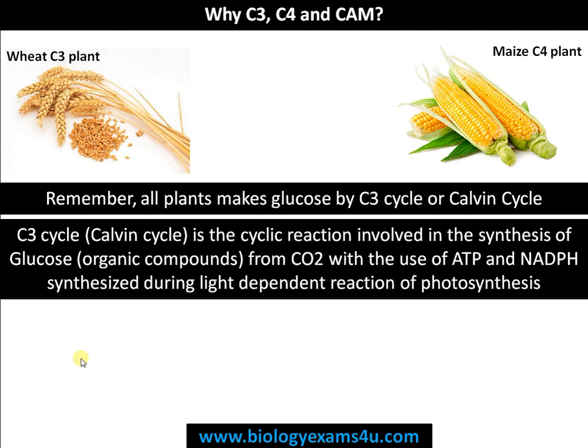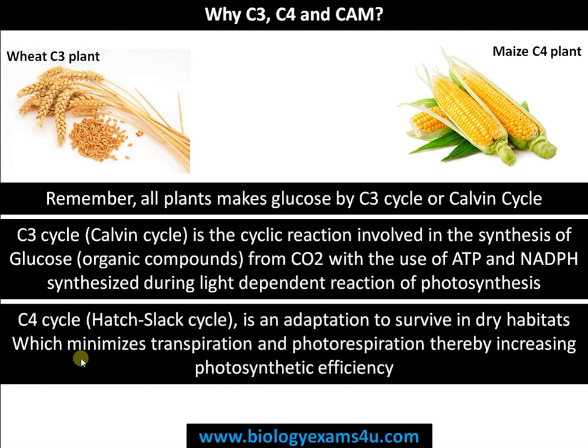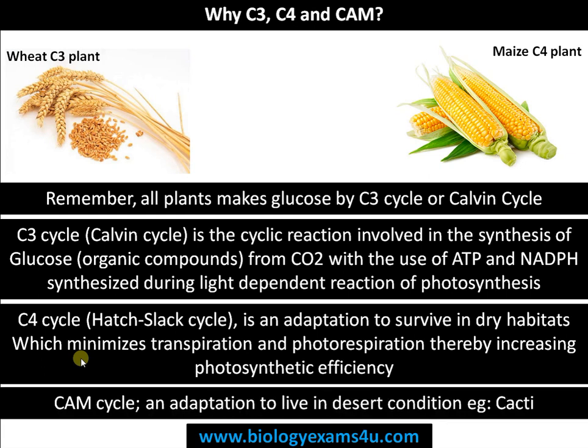C4 cycle is actually an adaptation to survive in dry habitats for two reasons: to minimize transpiration and to nullify photorespiration — a process that involves wastage of energy — thereby increasing photosynthetic efficiency. CAM cycle is an adaptation to live in desert conditions, which we'll discuss in the next video. The most important thing is that the C3 cycle is present in all plants and is responsible for glucose synthesis.